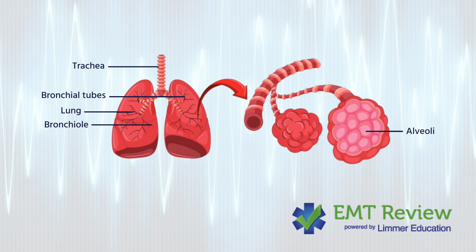Going down, we have the trachea that splits at the carina to the main stem bronchi, left and right. Those go into increasingly smaller airways — smaller and smaller until they get to bronchioles, very small airways that lead to the alveoli. The bronchioles have smooth muscle that tends to constrict in conditions like asthma.